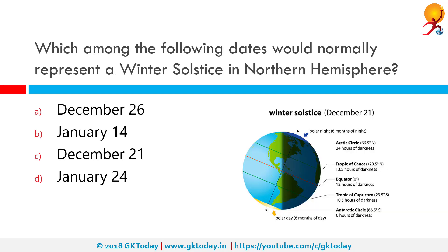Which among the following dates would normally represent a winter solstice in the northern hemisphere? The winter solstice, also known as mid-winter, occurs when one of the Earth's poles has its maximum tilt away from the sun. It happens twice yearly, once in each hemisphere. For that hemisphere, the winter solstice is the day with the shortest period of daylight and the longest night of the year, when the sun is at its lowest daily maximum elevation in the sky. In the northern hemisphere, this is the December solstice, usually the 21st or 22nd of December.